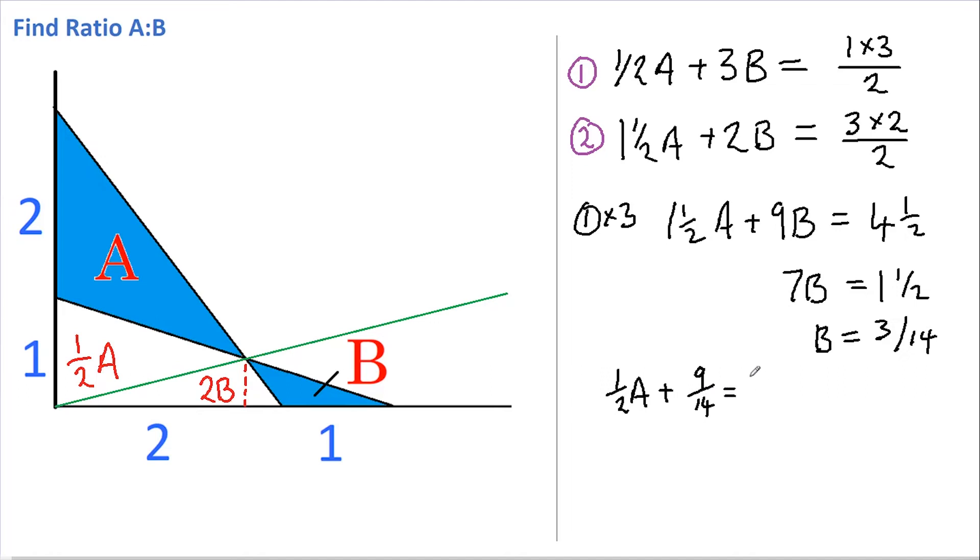We get equals 1 and a half, that's 3 over 2. Therefore, half A equals 3 over 2, which is 21 over 14, less 9 over 14, which is 12 over 14. And doubling both sides, we get A equals 24 over 14. Now we want to find the ratio of A to B, so this is 24 over 14 to 3 over 14. And multiplying both sides by 14, we get a ratio of 24 to 3, or 8 to 1. And that's our answer.